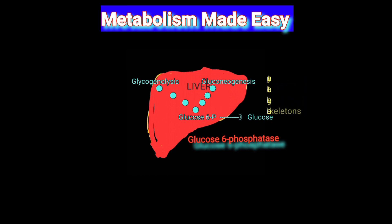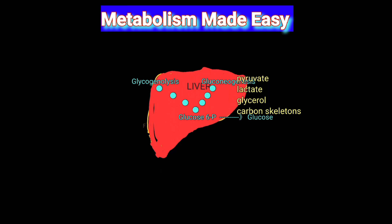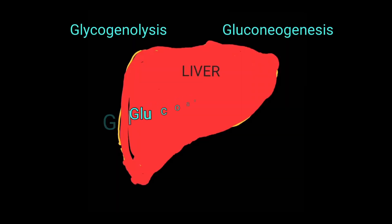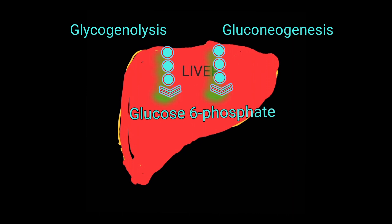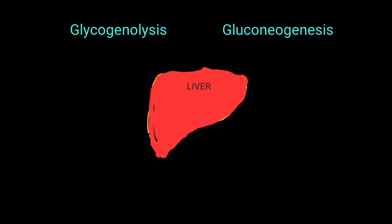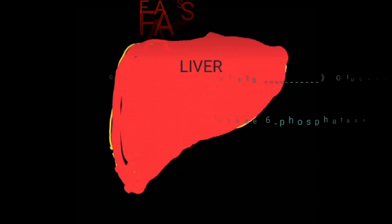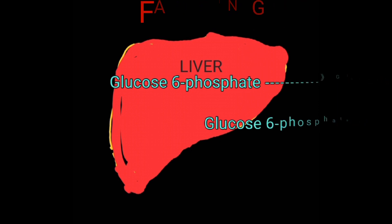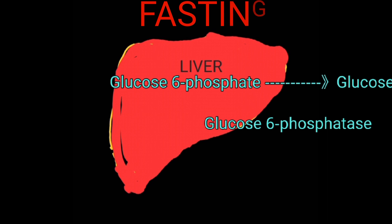— as well as glycerol and other carbon skeletons derived from amino acids to produce glucose. Both glycogenolysis and gluconeogenesis are more active in the fasting state. The common molecule produced from both pathways is glucose-6-phosphate. The liver is unique in that it has glucose-6-phosphatase, which produces free glucose from glucose-6-phosphate.